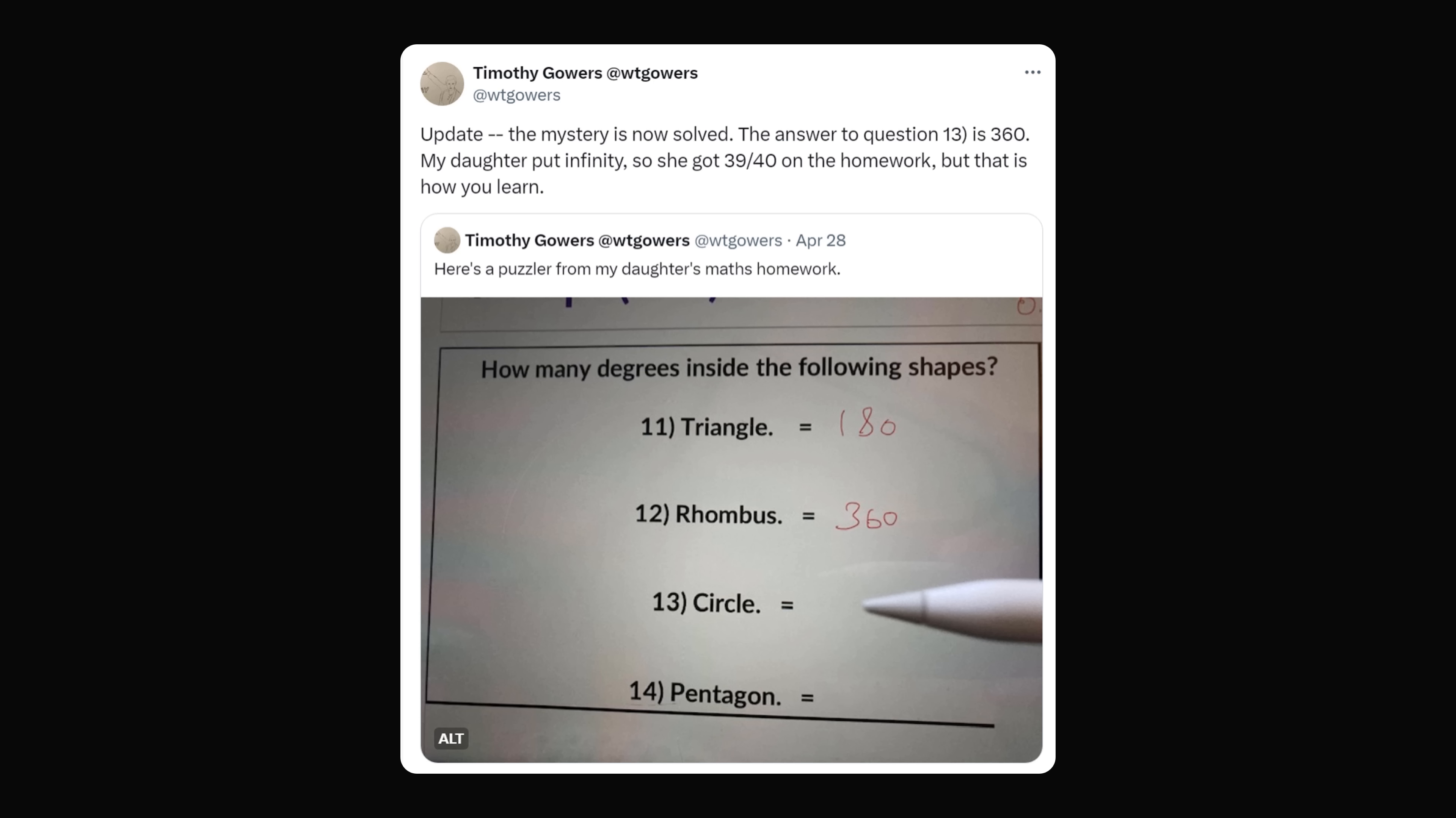But I want to offer one more perspective. This whole exercise got me thinking. Why do we say the number of degrees in a circle is 360 degrees? And does this question actually make any sense?